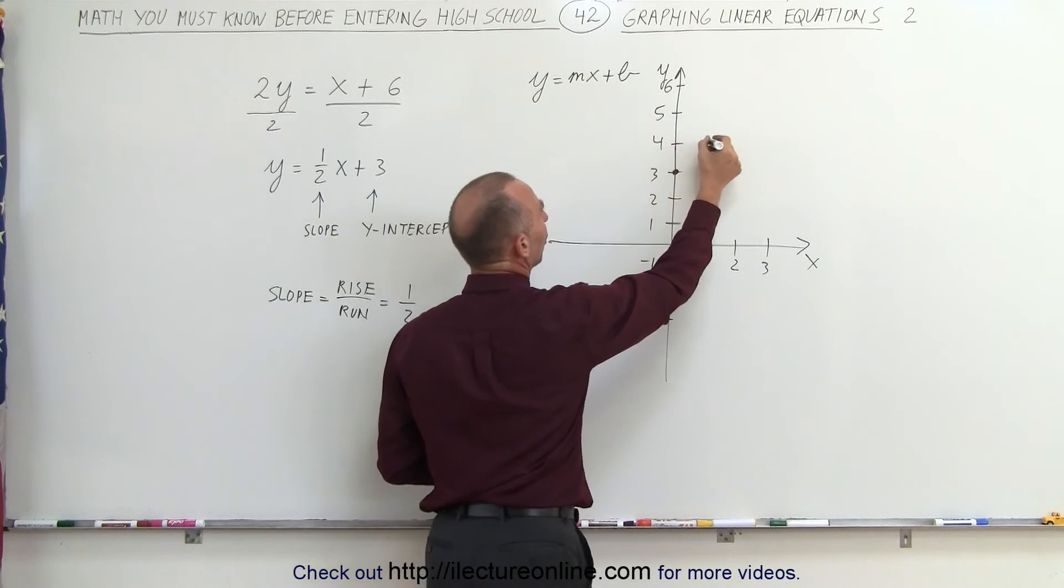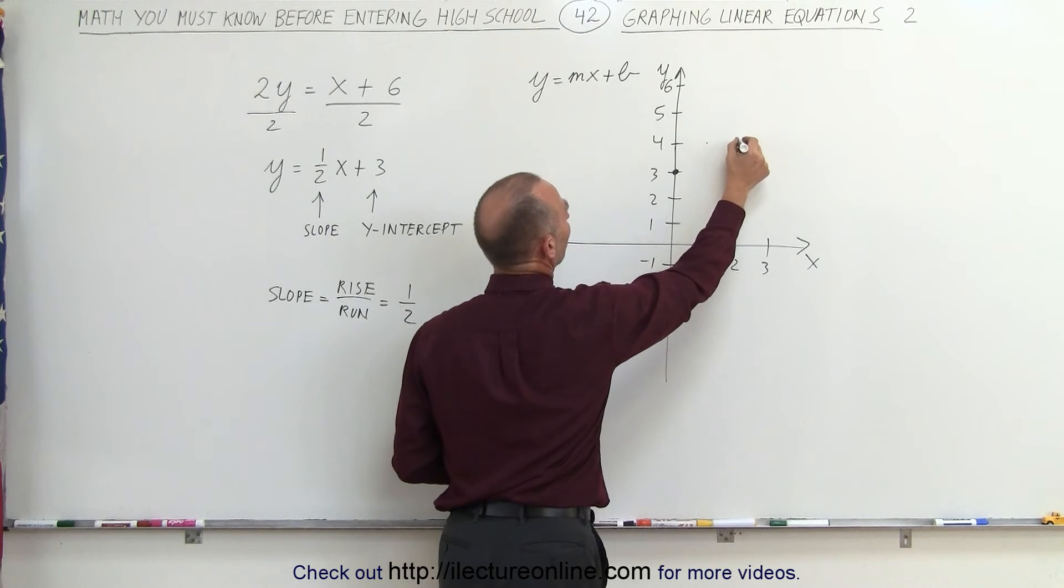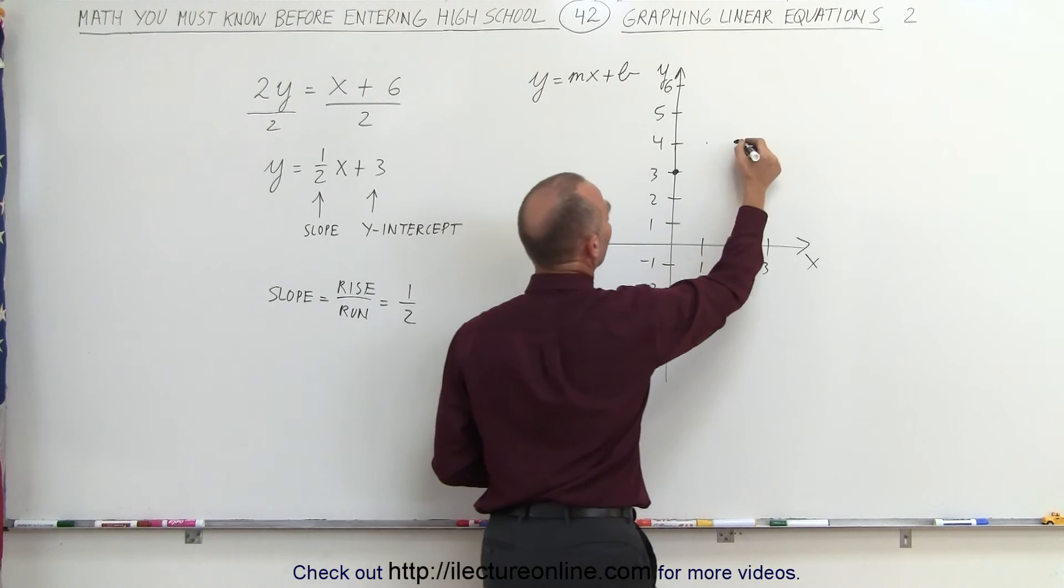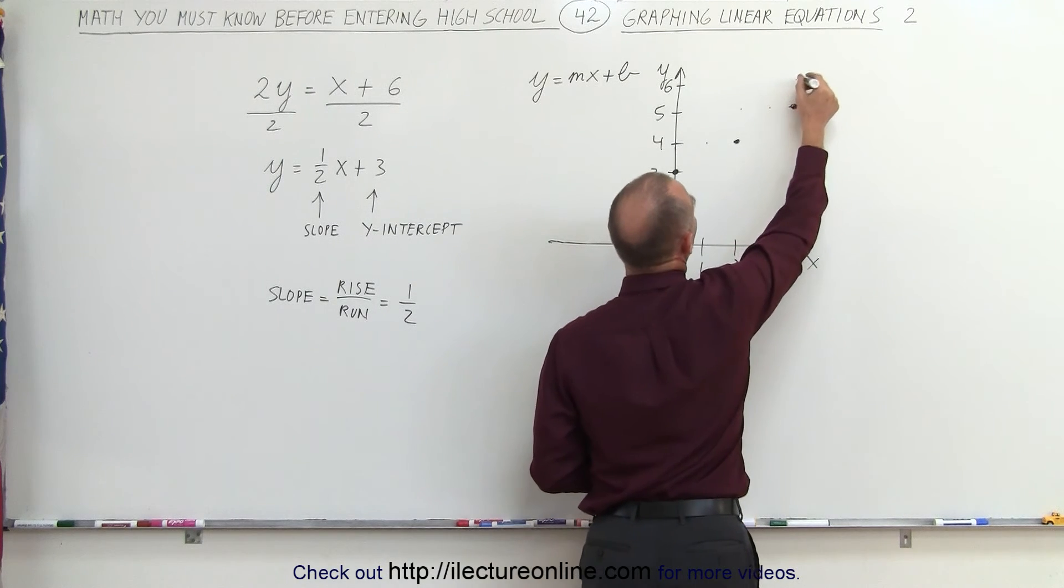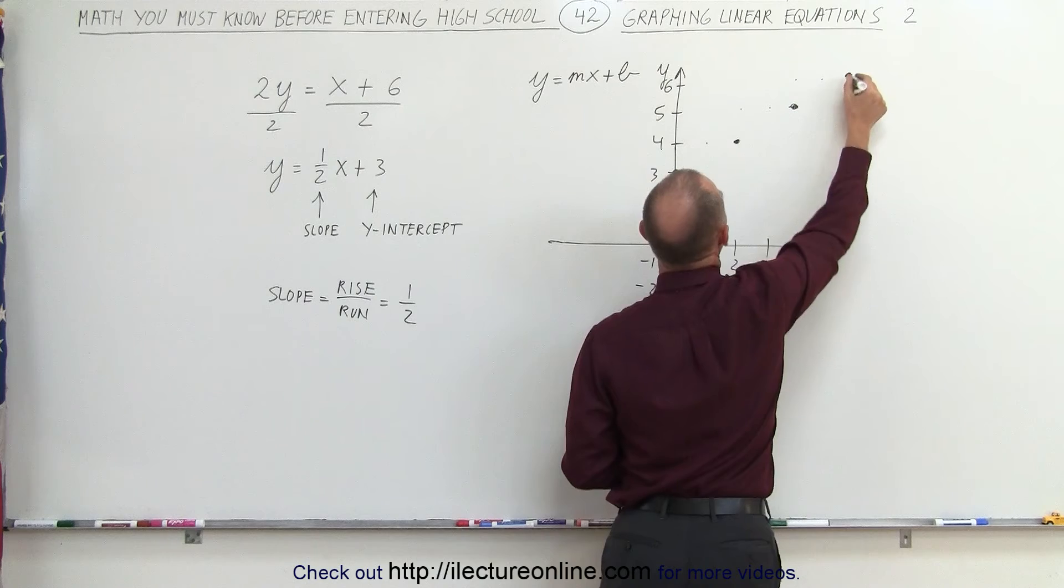I go up 1, over 2, 1, 2, and there's my new point. From that point, I can go up 1 and over 2, and there's my new point. From that point, I go up 1 and over 2, and there's my new point.